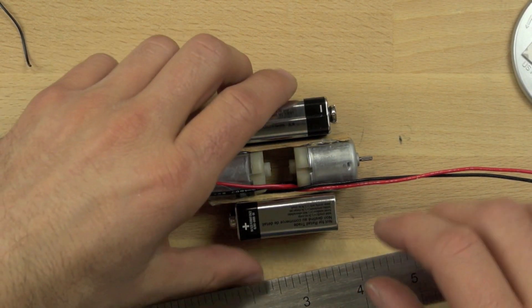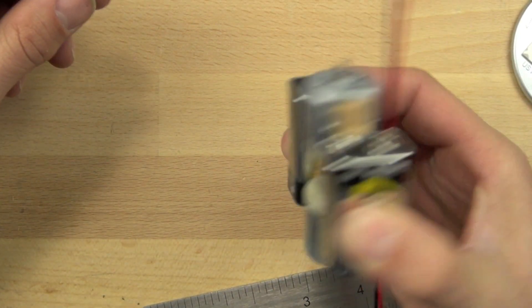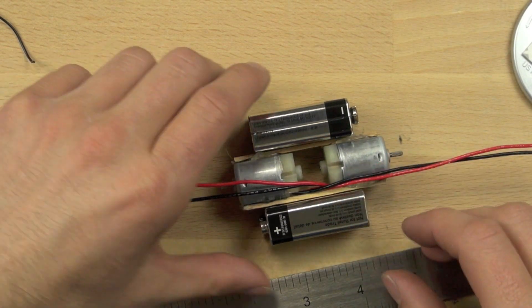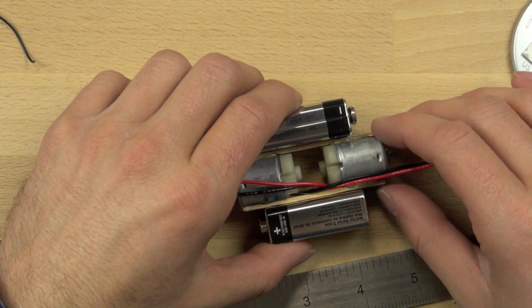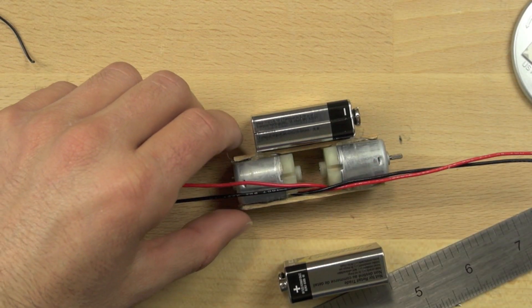That's what it should look like. We should have one battery facing one direction and the other facing the other direction. It's important that all of the different parts are flat on the table. So you want to make sure everything is pushed down flat on the table.